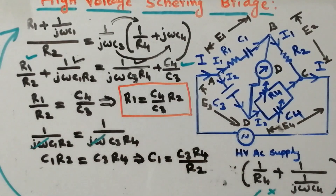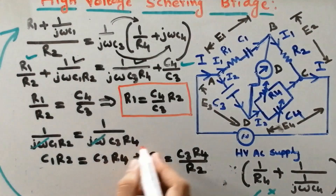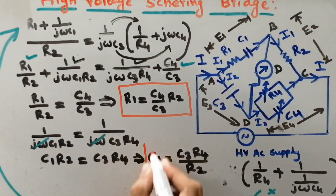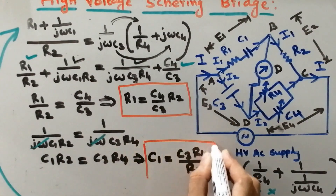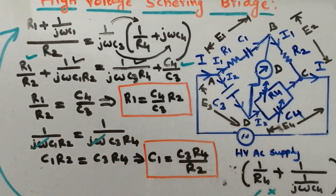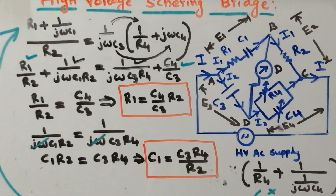Therefore, the unknown value of capacitor C1 is given by C3 times R4 divided by R2. So the unknown values of capacitor and resistor are given by these equations, which will be helpful for calculation of dielectric loss.